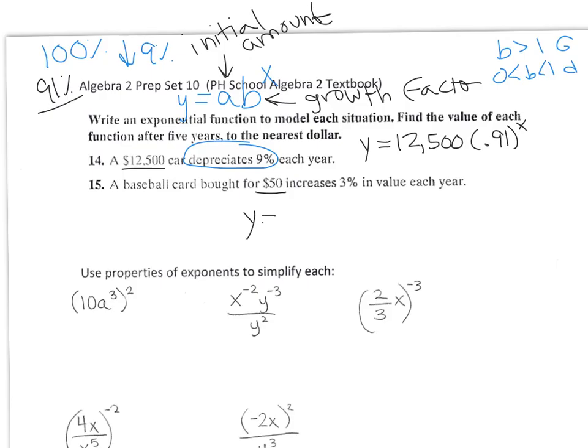For the second part, you would just plug in 5 for x in your calculator. This is decay, because the growth factor is between 0 and 1, and it's depreciating.